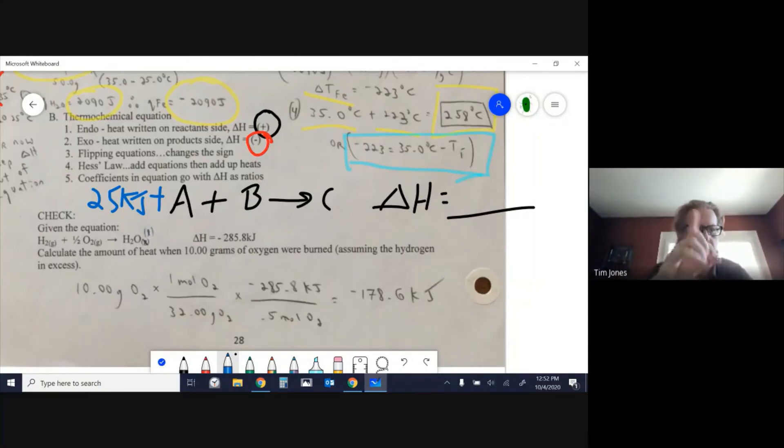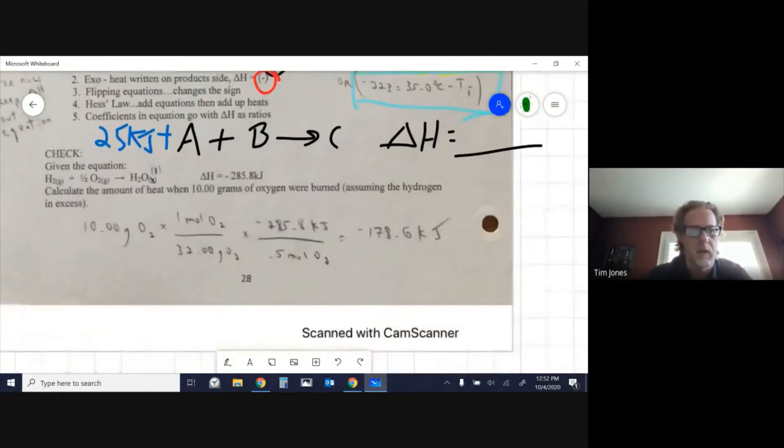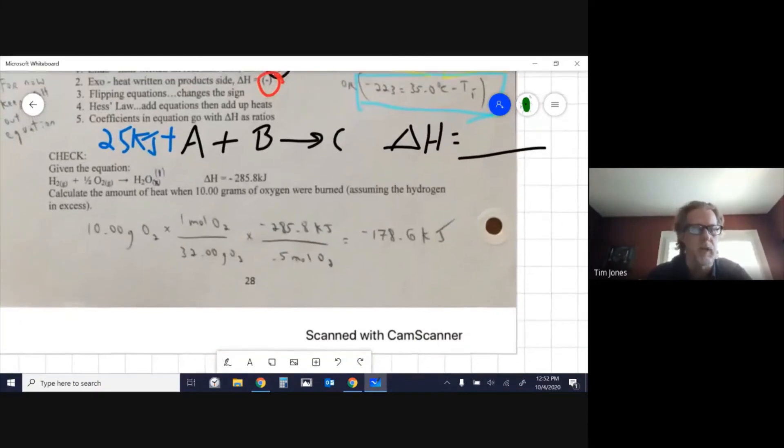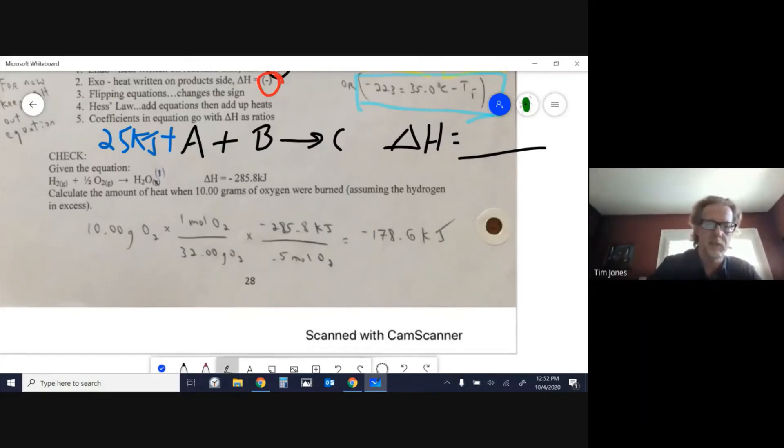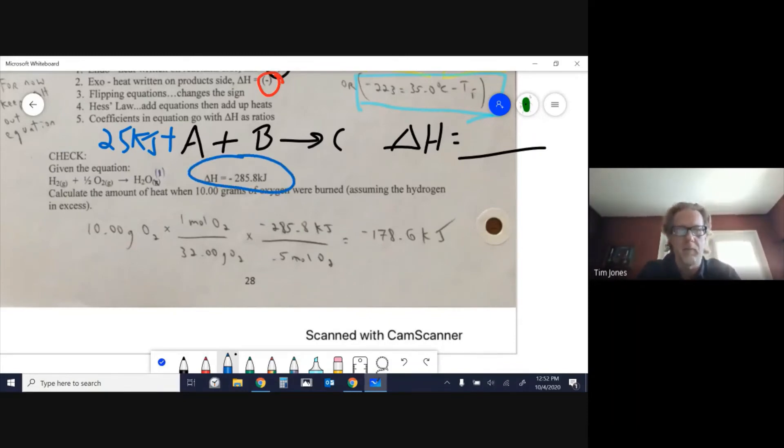We will review Hess's Law soon and do more problems. The last thing I want to show is how you can think of the delta H or enthalpy as one of the chemicals and do stoichiometry with it. This example shows delta H is negative 285.8 kilojoules.